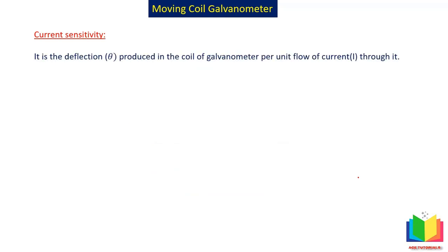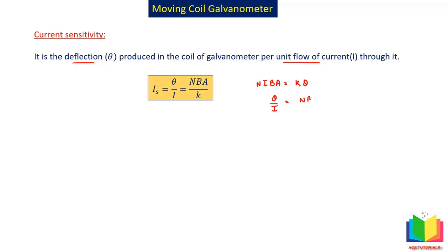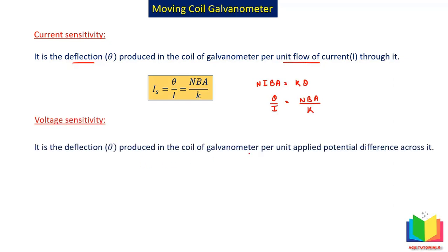Next we have to discuss two terms: current sensitivity and voltage sensitivity. Current sensitivity is the deflection produced in the galvanometer per unit current flowing through it. It is represented by Is = theta / I = N·B·A / K. Similarly, voltage sensitivity is the deflection produced in the galvanometer per unit applied potential difference across it. It is represented by theta / V. Since V = I·R by Ohm's law, substituting gives voltage sensitivity = N·B·A / (K·R). So this is the current sensitivity and this is the voltage sensitivity of the galvanometer.